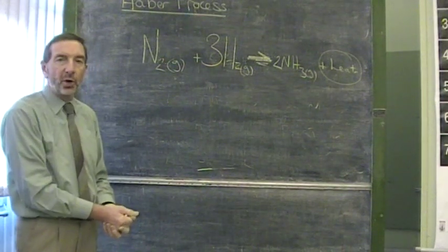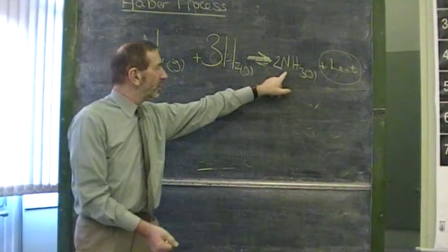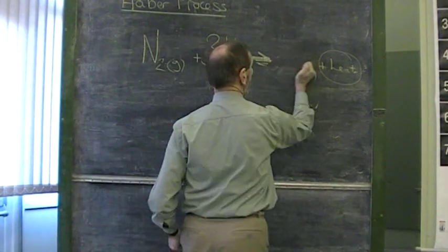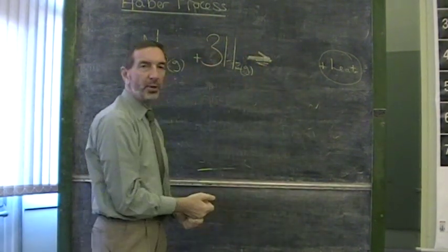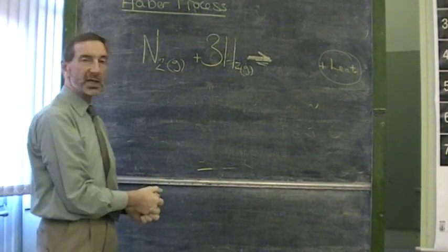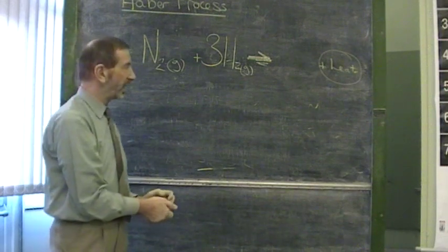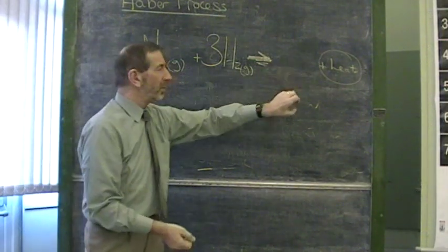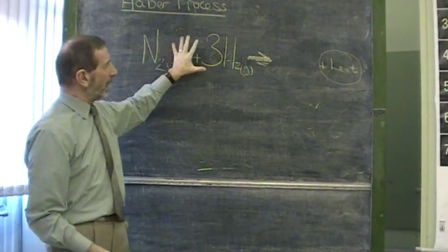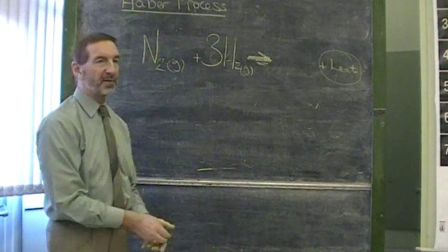What else can we do in terms of concentration to encourage the formation of ammonia? The answer is remove the ammonia. If we can remove the ammonia as it's formed, the system will try to replace that lost ammonia. And this is what's done in practice. So once again, in practice, the ammonia is removed as it's formed. The reactants' concentration gets high, and put together, that encourages the forward reaction.